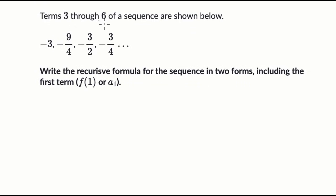We're told terms three through six of a sequence are shown below. Write the recursive formula for the sequence in two forms, including the first term. The first term would either be f of one or a sub one. When they're saying the two forms, one is using function notation and one is using this lower case with subscript notation. Pause this video and have a go at that before we do this together.